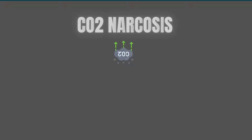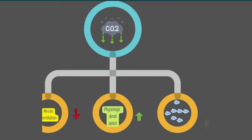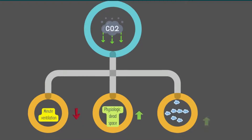Although the etiology is complex, it's useful to categorize the potential causes into three categories: decreased minute ventilation, increased physiologic dead space, and increased carbon dioxide production.